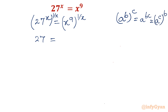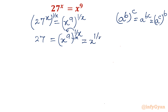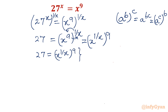The property is: a power b, whole power c, equals a power the product of the powers, and we can switch the powers. So the right hand side, x power 9 whole power 1 over x, becomes x power 1 over x, whole power 9. So we have 27 equal to x power 1 over x, whole power 9. Now I will take both sides to the power 1 over 9 — the 9th root.